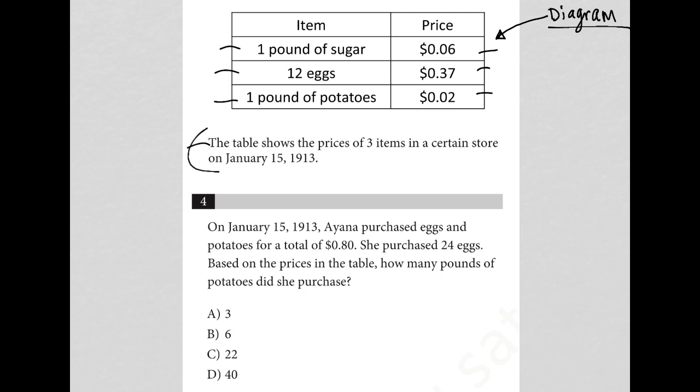This is all on January 15th, 1913. The actual question here says on January 15th, 1913, Ayana purchased eggs and potatoes for a total of 80 cents. Obviously she bought more than just one of each